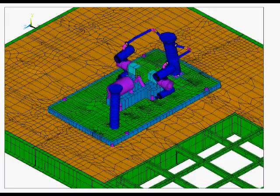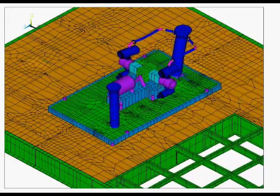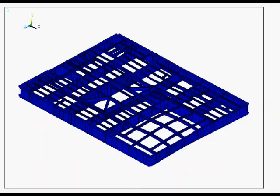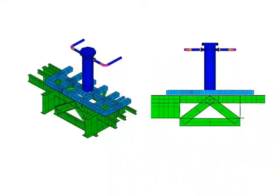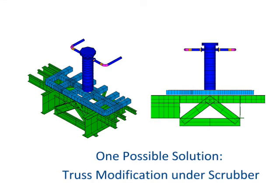To resolve this problem, Beta conducted a structural dynamic analysis. The dynamic analysis evaluates the root cause of the problem and is used to test various solutions. This is one example of a possible solution that includes a truss mounted underneath the scrubber.